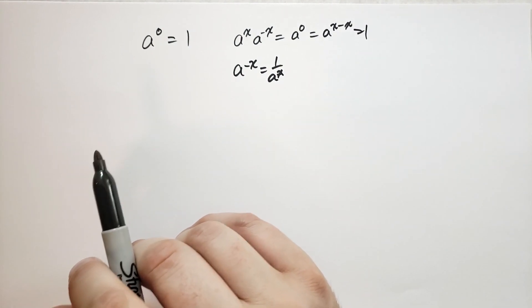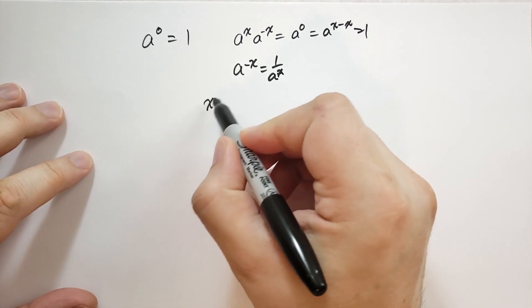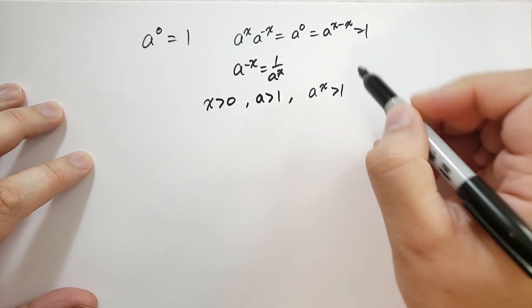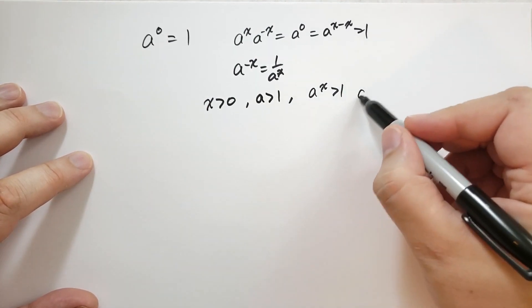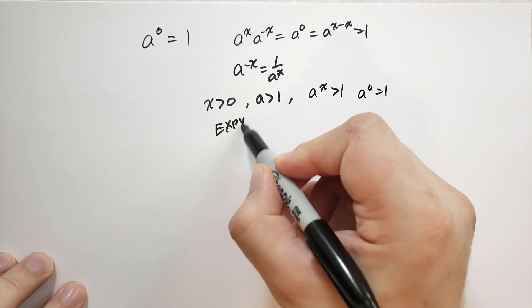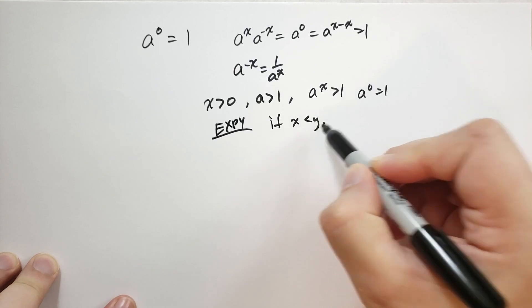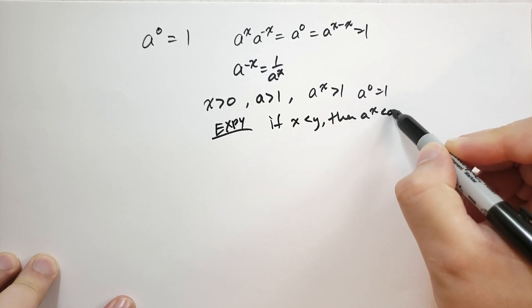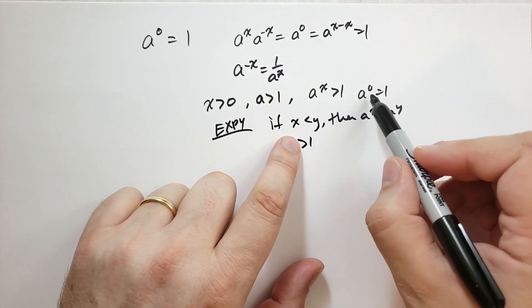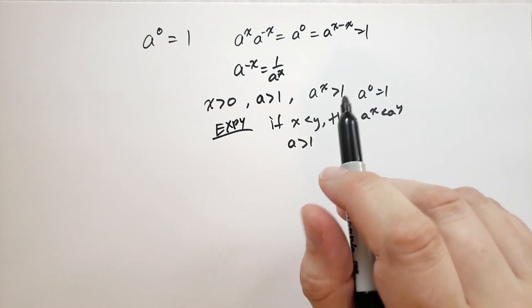The values of the exponential function are always positive. If x is greater than 0 and a is greater than 1, then a^x must be greater than 1. Because a^0 equals 1, and the rule EXP4 told us that if x is less than y, then a^x must be less than a^y if a is greater than 1. So that means that if we have any number bigger than 0, then it must be bigger than 1.